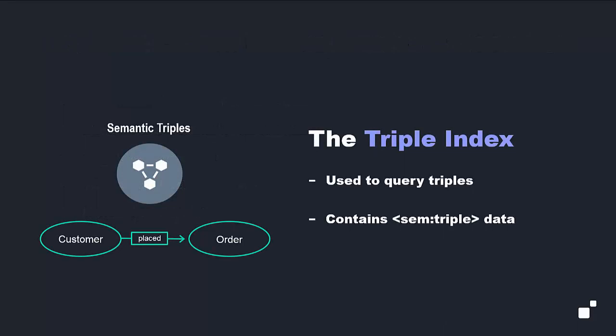As a reminder, the MarkLogic triple index is a special index for the fast retrieval of triple data. The triple index is used to index schema-valid sem:triple elements found anywhere in a document. The indexing of triples is performed when documents containing triples are ingested into MarkLogic or during a database re-index.